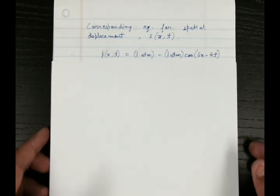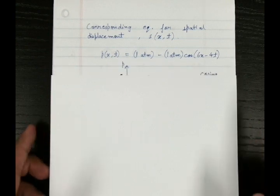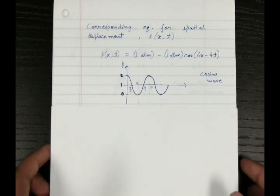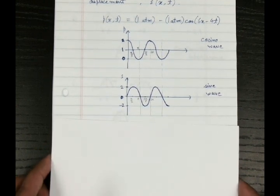So if a pressure wave is a cosine wave, our displacement wave will be a sine wave because of the 90 degree phase shift. So if this is our pressure wave, which is a cosine wave, our spatial wave will be given by a sine wave like this.